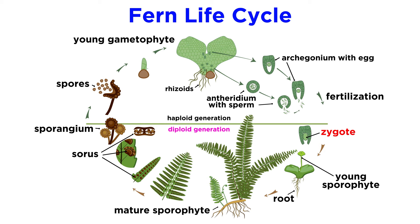Once an egg cell has been fertilized, it germinates into a new diploid sporophyte directly from the gametophyte. Once the sporophyte is ready, the gametophyte dies off.